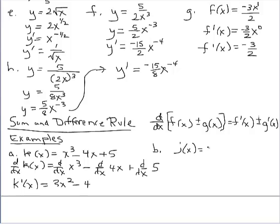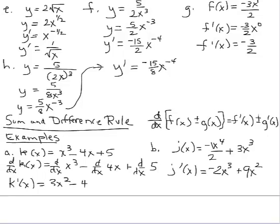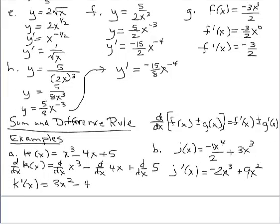Let's consider the j function — a fourth degree function that appears ready for differentiation. Think of the coefficient as negative 1 half. Going right to j prime: multiply 4 times negative 1 half, which is negative 2, keep the base of x, reduce the exponent to 3. Plus, differentiating the second term separately with the power rule gives 9x squared. So the derivative with multiple terms using the sum and difference rule is negative 2x cubed plus 9x squared.